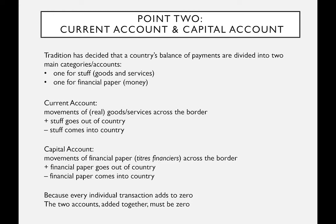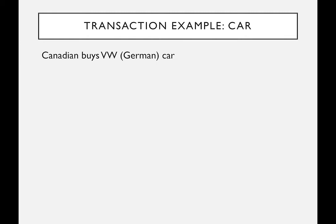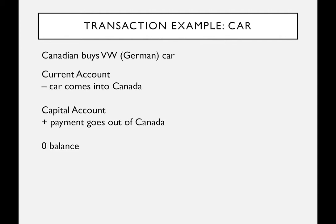Every transaction is recorded with opposite signs that are equal, so both entries add up to zero. Statistics Canada records actual dollar values. At year end, the total for the current account and the total for the capital account must also equal zero — the balance of payments by definition must sum to zero. For example, a Canadian buying a Volkswagen made in Germany: the car comes into Canada, recorded as a minus on the current account; the payment going out to Germany is recorded as a plus on the capital account. Added together: zero.